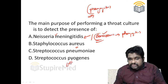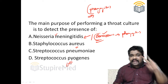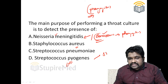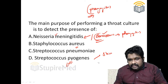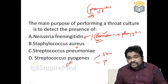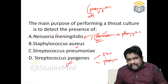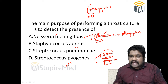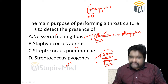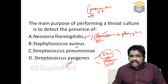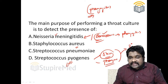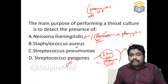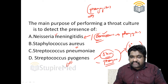Streptococcus pyogenes can attack two parts of your body: one is your skin, and the second is your pharynx. They are referred to as dermatological strains and pharyngitis-causing strains, and these two kinds of strains can trigger a secondary immune response, which is a delayed antibody-mediated response.